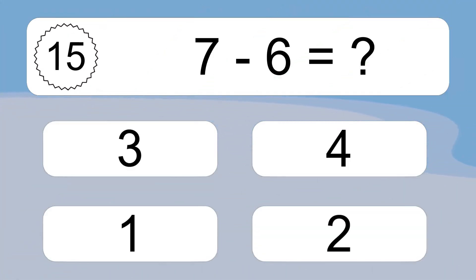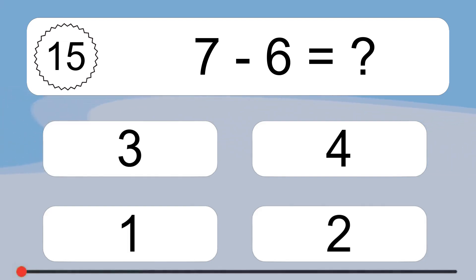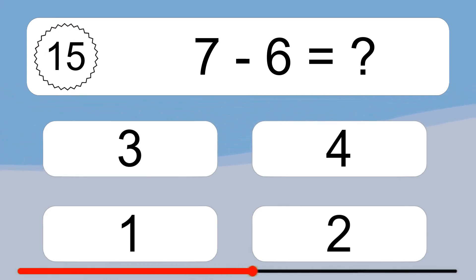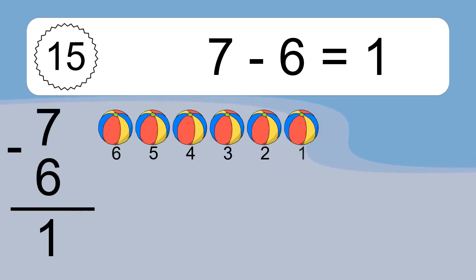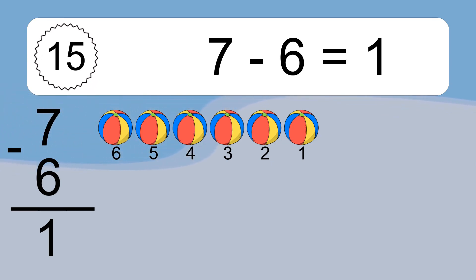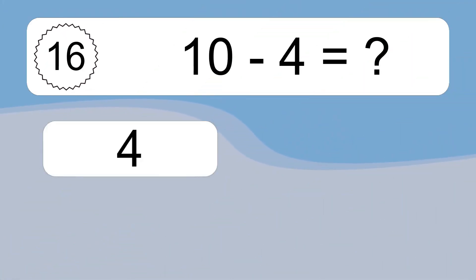7 minus 6 equals what? 7 minus 6 equals 1. Let's count it: 6, 5, 4, 3, 2, 1.